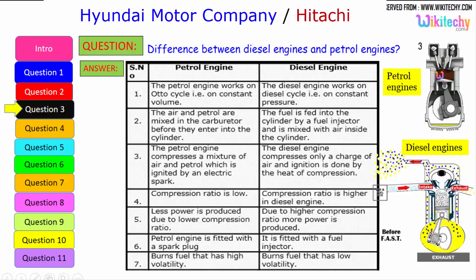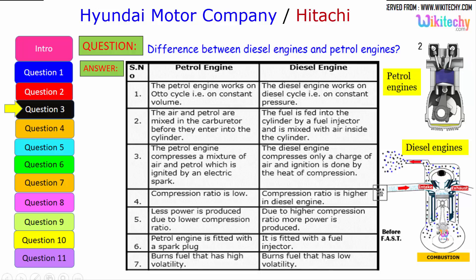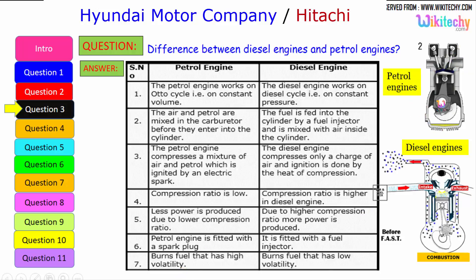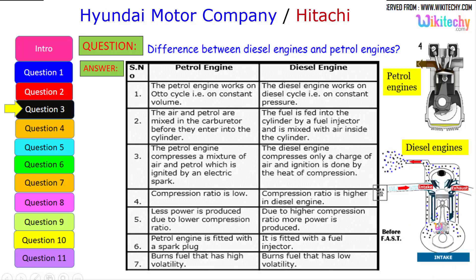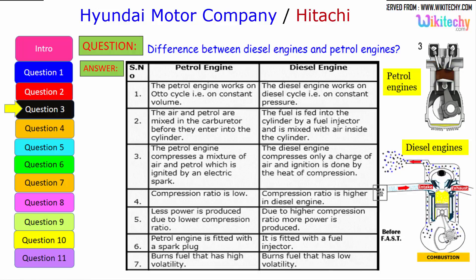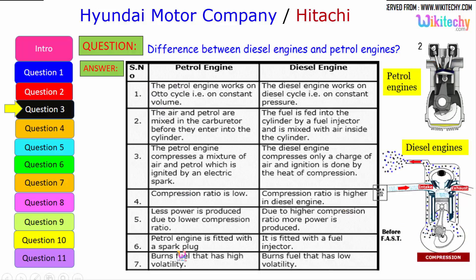The petrol engine is fitted with a spark plug, while the diesel engine is fitted with a fuel injector. The petrol engine burns fuel with high volatility — petrol is highly volatile — whereas the diesel engine can burn low volatility liquid as well, since diesel is a low volatile liquid. These are some of the key differences between the petrol engine and diesel engine.